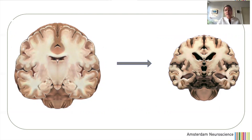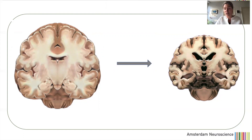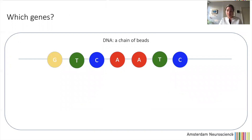One way to predict who will get Alzheimer's disease is by using the genome. We know from twin studies that 60 to 80 percent of Alzheimer's disease risk is defined by your genome. Unfortunately we are not aware of all the genetic factors that associate with the disease, so we have to compare large samples of individuals who have Alzheimer's disease with individuals who do not.